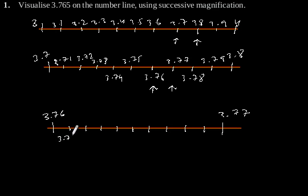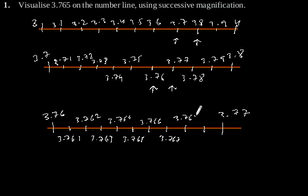3.761, 3.762, 3.763, 3.764, 3.765, 3.766, 3.767, 3.768 and 3.769. So we got our point that is 3.765.